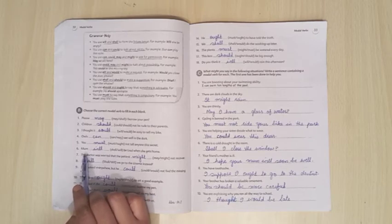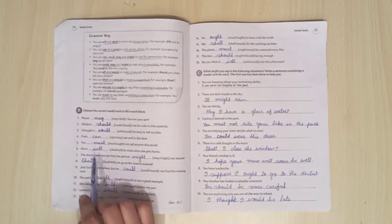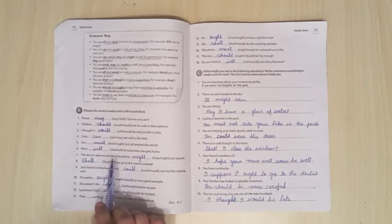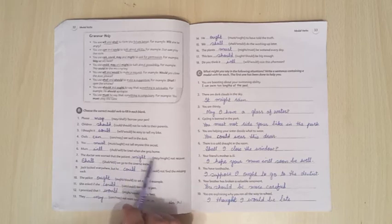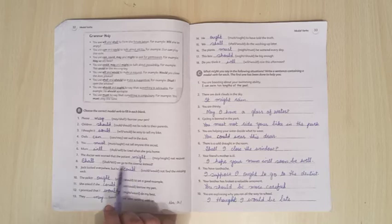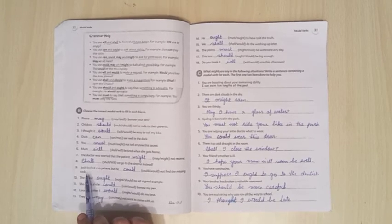Mom will be tired when she gets home. Will will be used here to form the future tense. The doctor was worried that the patient might not recover. Might will be used here to talk about the possibility. Shall we go to the cinema instead? Shall will be used here to form the future tense.